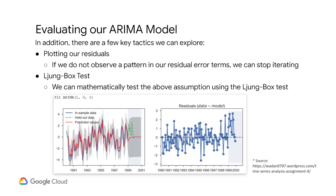One, plotting our residuals. As you can see in the model on the left and the chart on the right, if we do not observe a pattern in our residual error terms, we can stop iterating. In this instance, the model indeed seems good, since the residuals on the right don't have a clear pattern. Second, the Ljung-Box test — we can mathematically test the above assumption using the Ljung-Box test.